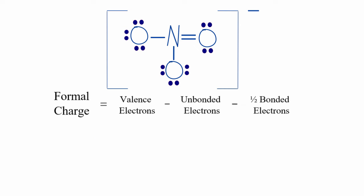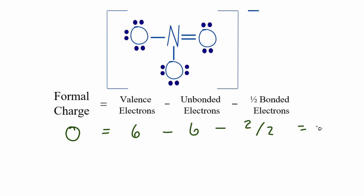Here is the Lewis structure for NO₃⁻, the nitrate ion. Note that there are resonant structures — you could place the double bond in different positions — but the way we calculate formal charges is the same. For the oxygen with the single bond: six valence electrons minus six unbonded electrons, minus two bonded electrons divided by two. Six minus six minus one gives a formal charge of negative one. Since the other single-bonded oxygen is identical, it also gets a formal charge of negative one.